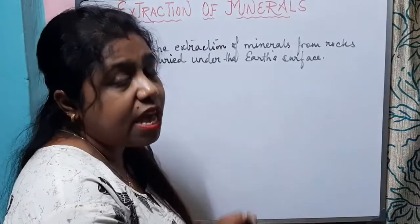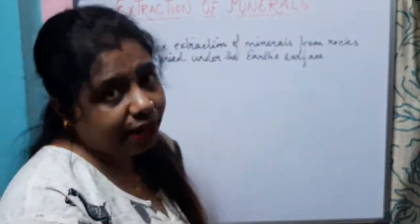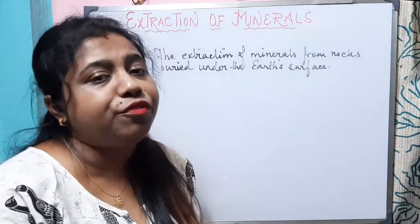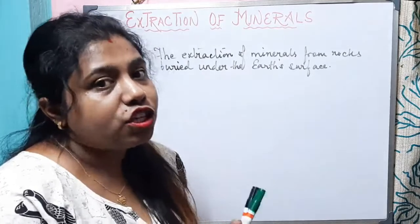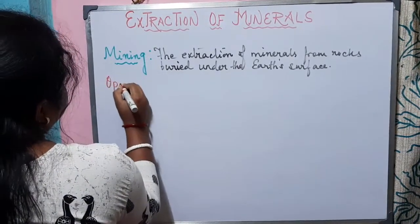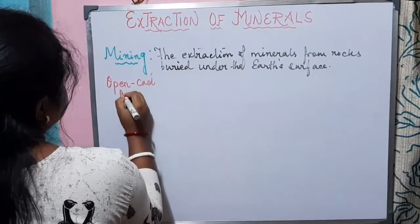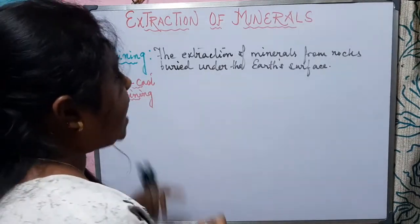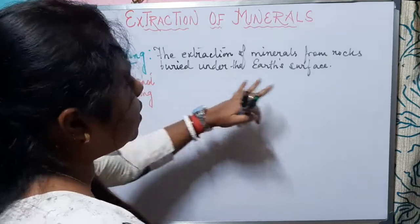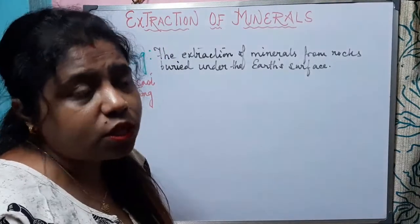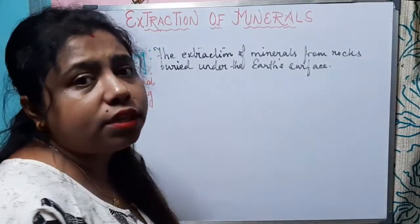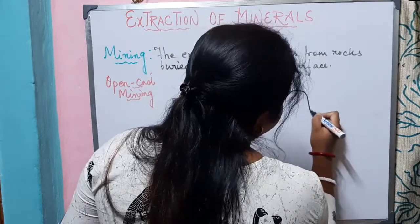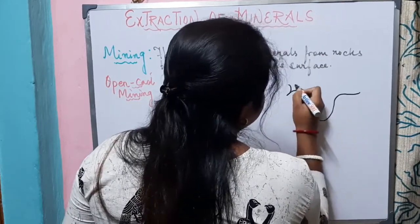We obtain minerals from rocks, and these rocks lie under the earth's surface. This process is referred to as mining. Now let us know about the two types of mining: open cast mining and shaft mining. Minerals or rocks do not always lie near the surface; some minerals lie at shallow depth.